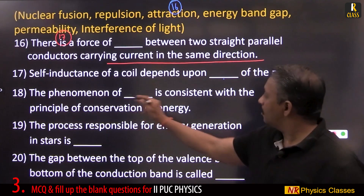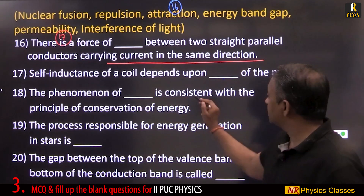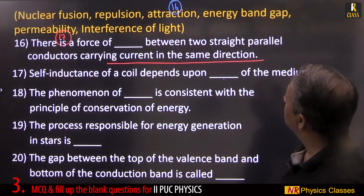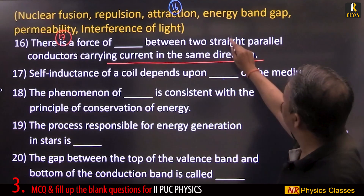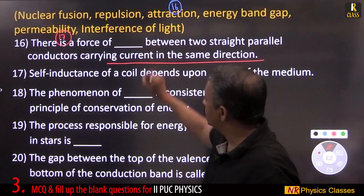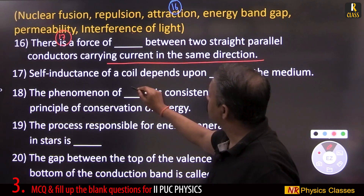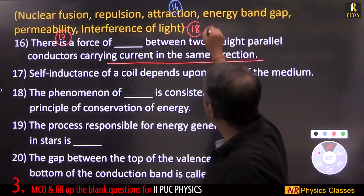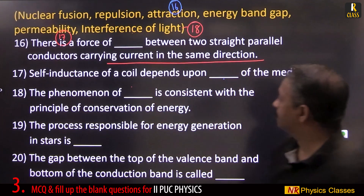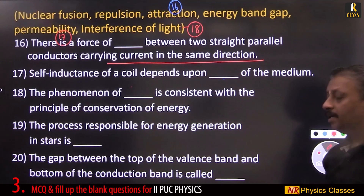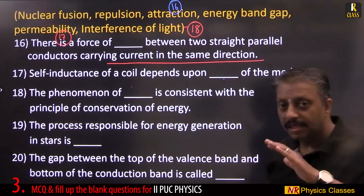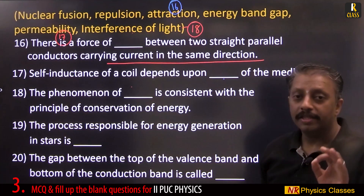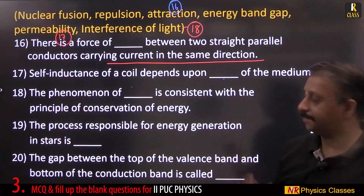The phenomenon consistent with the principle of conservation of energy is interference of light. In interference, energy is neither created nor destroyed — the total energy remains constant, just redistributed.